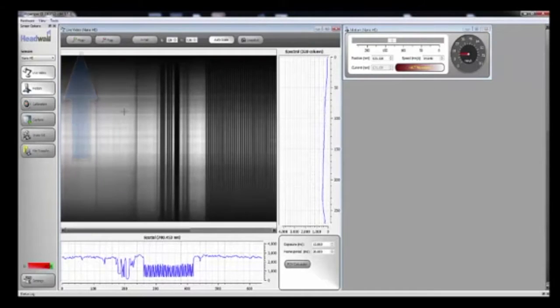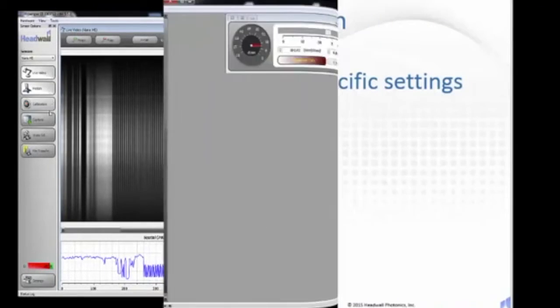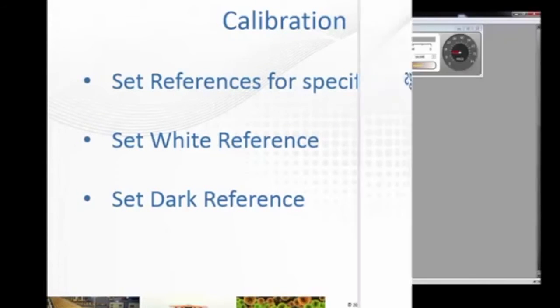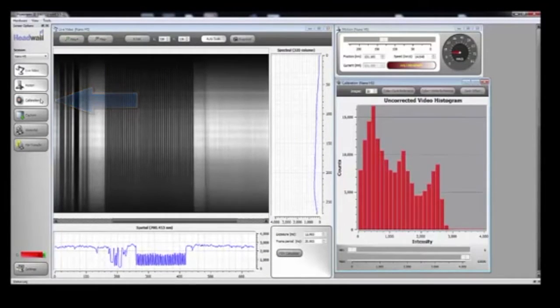Magnify the view. Next, we need to calibrate for the light conditions. This is done by setting the white and dark references. Click the Calibrate button to open the calibration histogram.